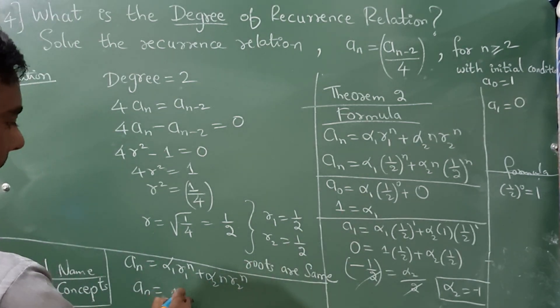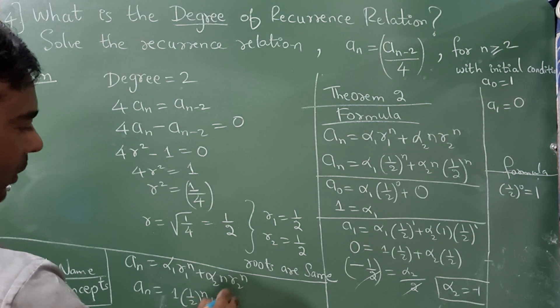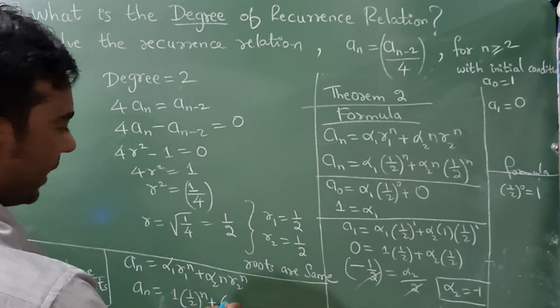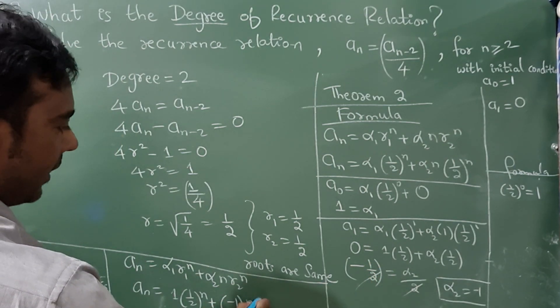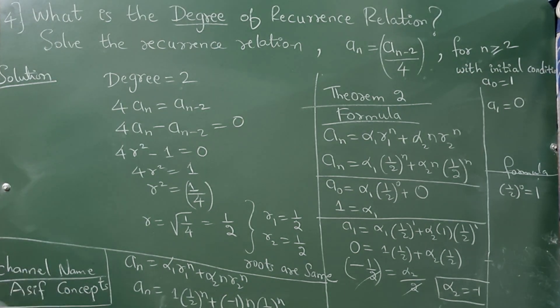What is α₂? It is -1. And what is r₂? It is 1/2 raised to n. This completes your answer: a_n = (1/2)ⁿ - n·(1/2)ⁿ.